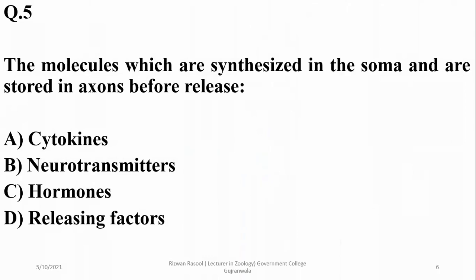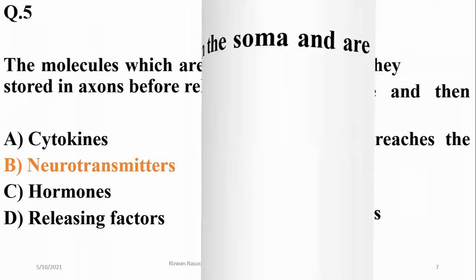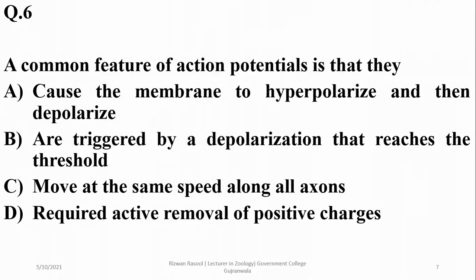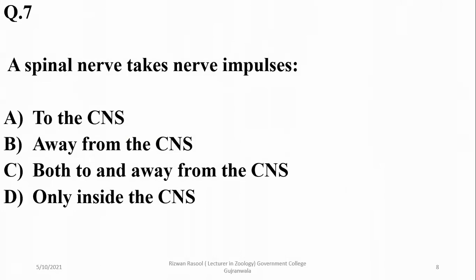The molecules which are synthesized in the soma and stored in axons before release are neurotransmitters, so beta is correct. A common feature of action potentials is that they are triggered by a depolarization that reaches the threshold level, so beta again.